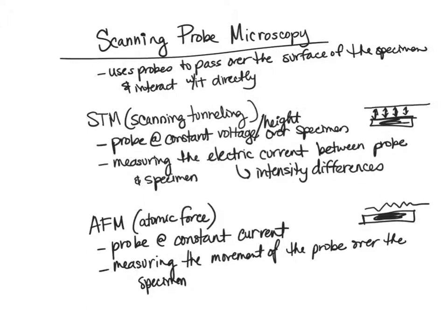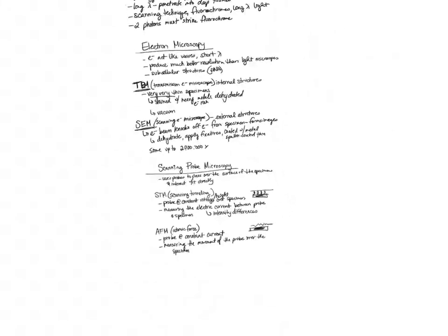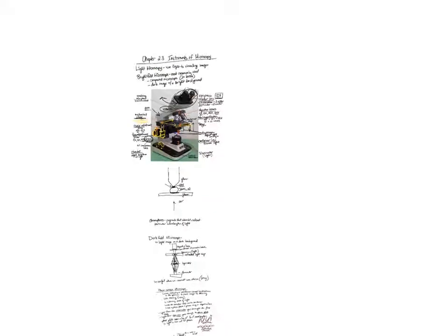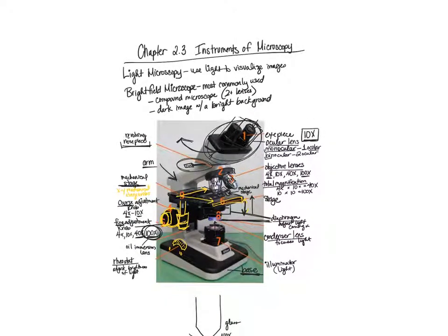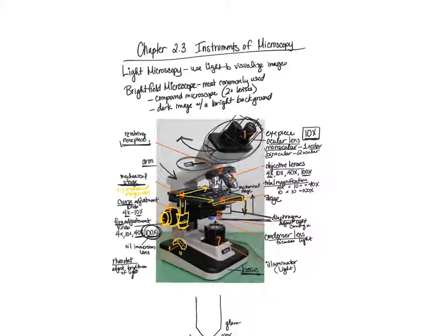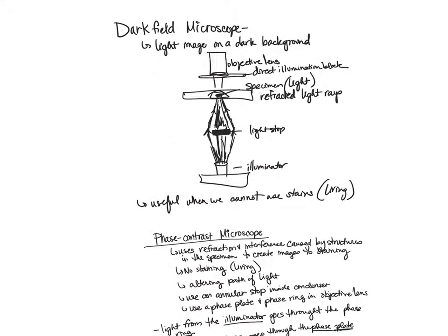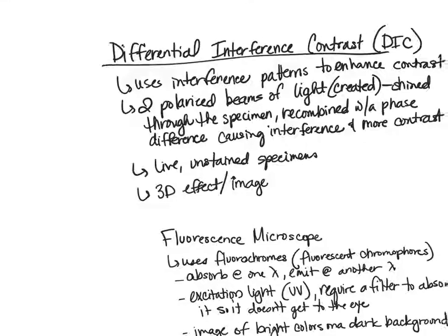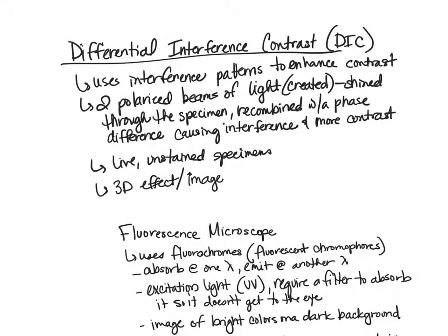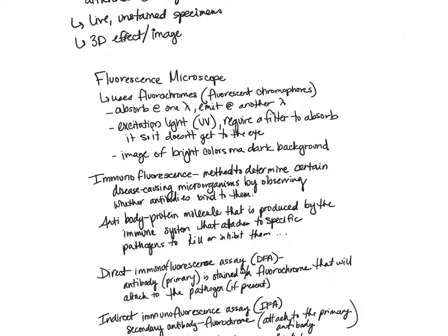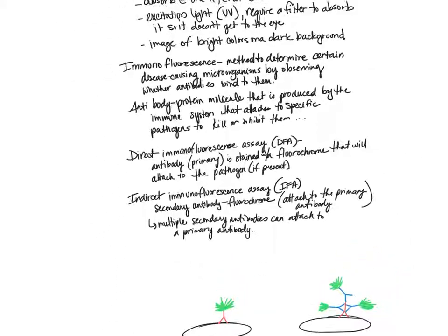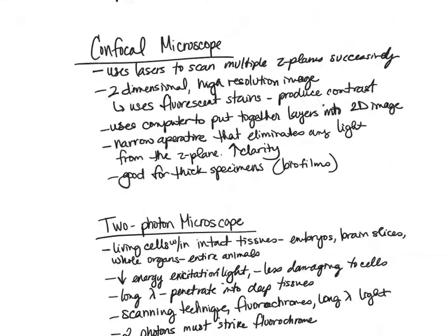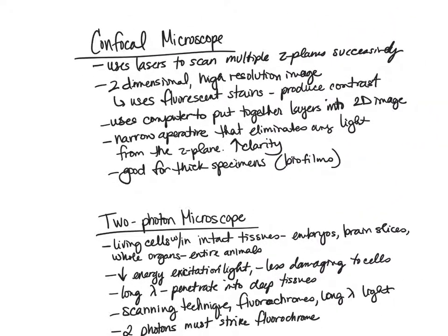Those are all the microscopes you should be familiar with. Know the different parts of the light microscope, how they work, and what they're called. Know your darkfield, phase contrast, differential interference contrast, and fluorescence microscopes — including immunofluorescence. Know the confocal and two-photon microscopes for thick specimens, and the electron and scanning probe microscopes. For each, understand when you would use them, why, and whether they work with live or stained specimens.